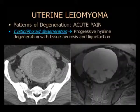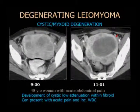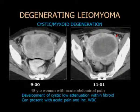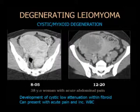Esta paciente llegó con dolor abdominal. Teníamos un estudio antiguo para comparación: había sufrido una zona grande de degeneración quística, llegó con aumento en el recuento leucocitario y dolor agudo. Esta fue la fuente de su dolor pelviano. Otra paciente similar: comparamos la licuefacción o degeneración mixoide en pacientes que llegan con dolor pelviano.